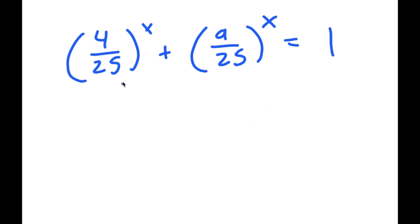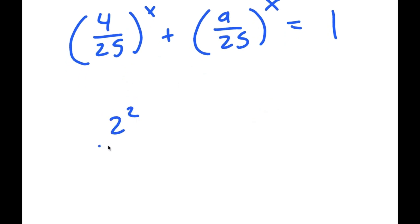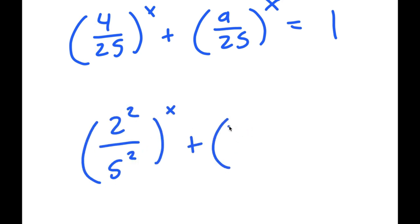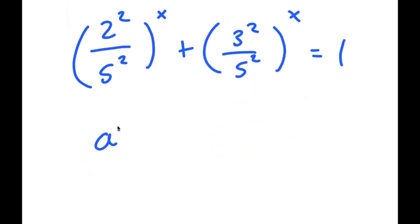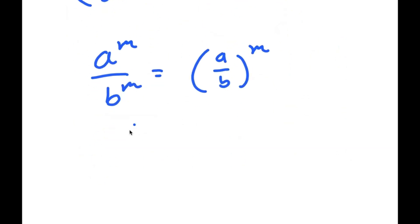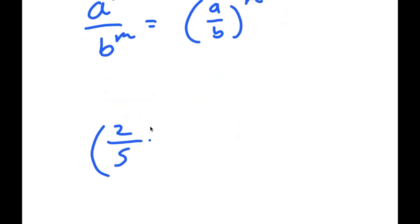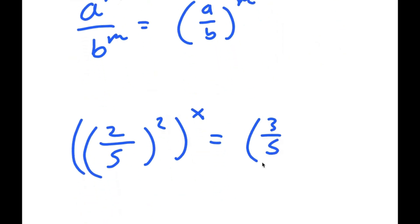From here I can rewrite 4 over 25 as 2 squared over 5 squared, and I can rewrite 9 over 25 as 3 squared over 5 squared. Now using the same rule — a to the power of m over b to the power of m equals a over b to the power of m — 2 squared over 5 squared turns into 2 over 5 squared, and 3 squared over 5 squared turns into 3 over 5 squared.